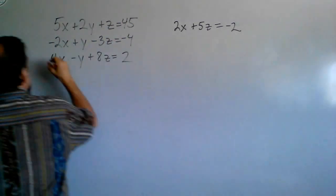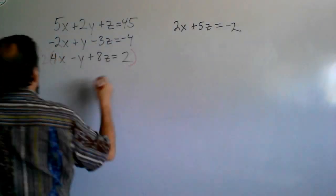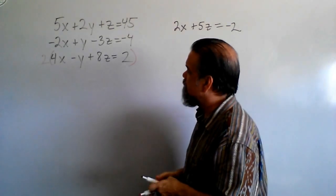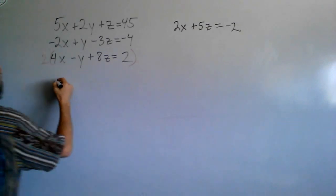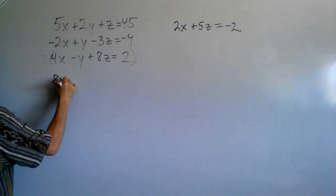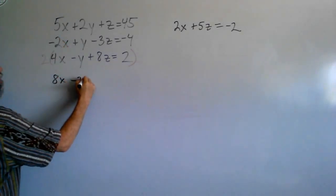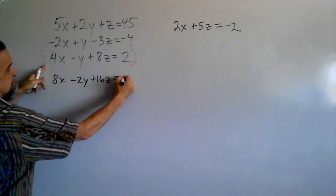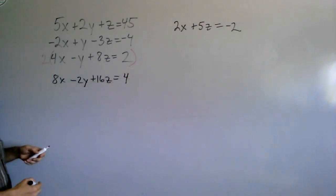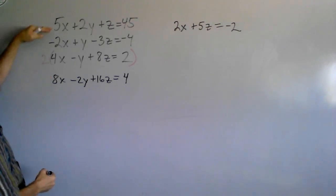So, I'm going to take two times this one, and so that's going to give me, let me write it right here below it. I'm going to get 8x minus 2y plus 16z equals 4. And now, I'm going to add this line to the top line.